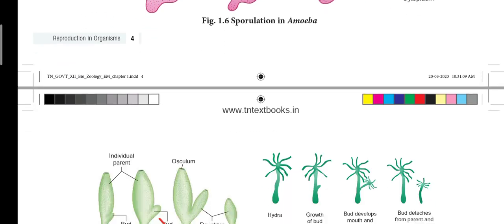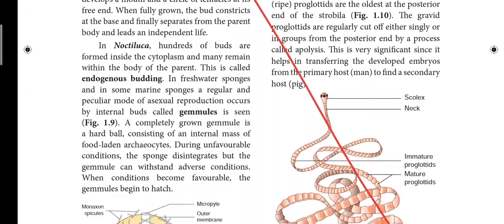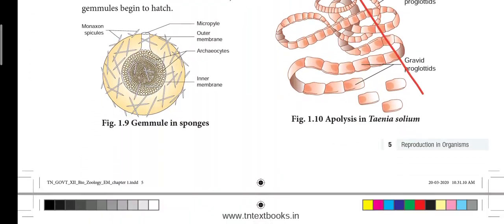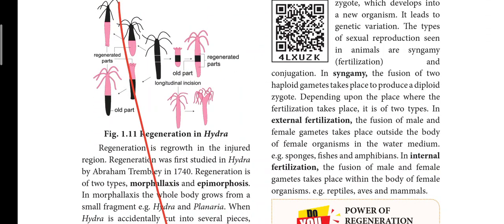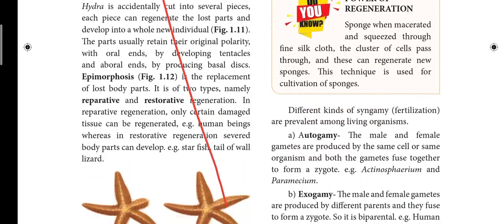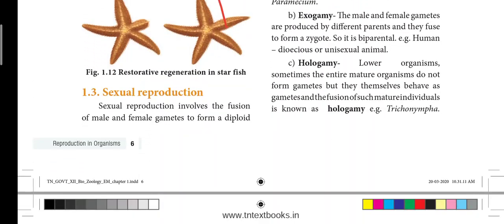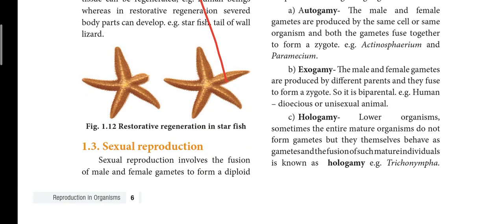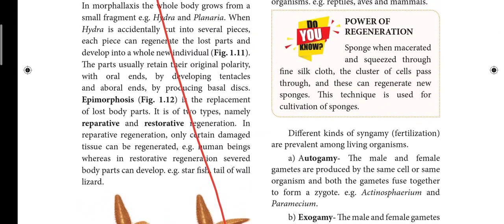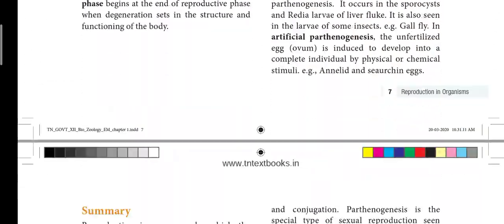The 4th page is full of strikeout. The 5th page is full of strikeout. The 6th page has heading 1.3 — key sexual reproduction — which is above, and that portion is reduced from the syllabus.